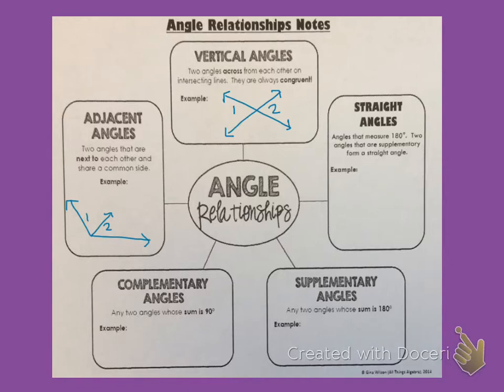Straight angles are angles that measure 180 degrees. Two angles that are supplementary form a straight angle, and a straight angle pretty much just looks like a straight line. We can see if we measured it that it is a 180 degree angle.